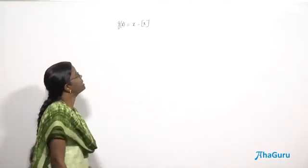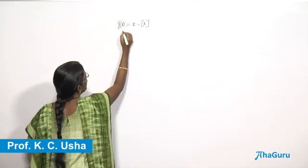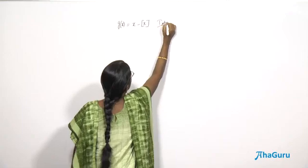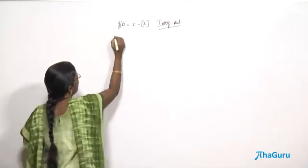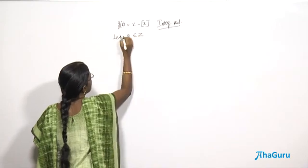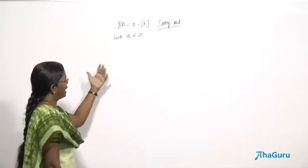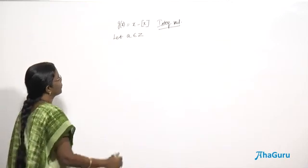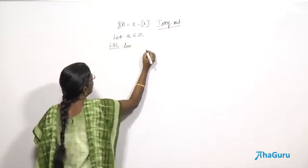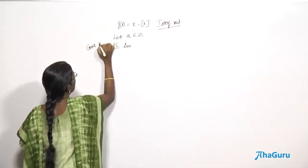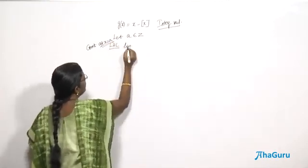The function g(x) = x minus the greatest integer function of x. We are asked to prove that this function is discontinuous at every integral value. We will consider 'a' to be any integer — positive, negative, or zero. We will check the left limit at 'a', the right limit at 'a', and the functional value — checking continuity of the function at x = a, where 'a' is any integer.